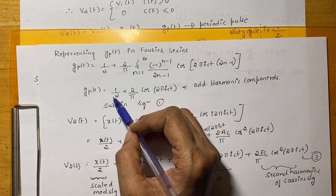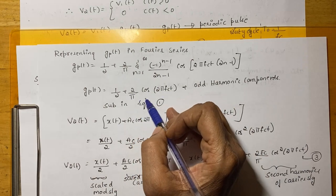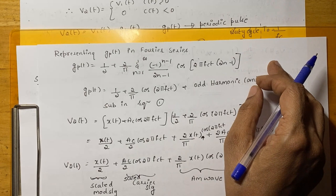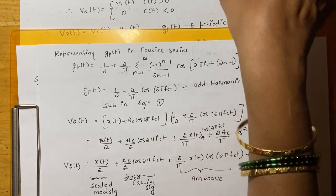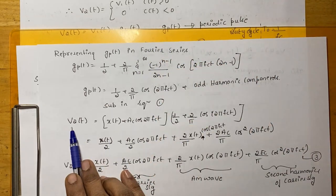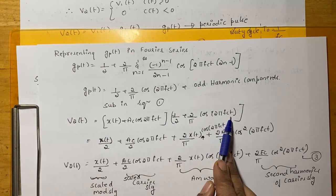That is, GP(t) is expressed as 1/2 + 2/π cos(2π FcT) plus odd harmonic components. Now, substituting in equation 1, that is whatever we have got that V2(t),